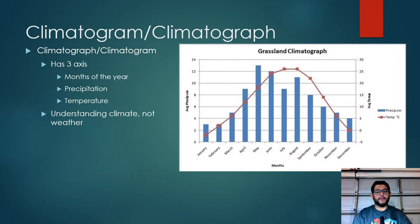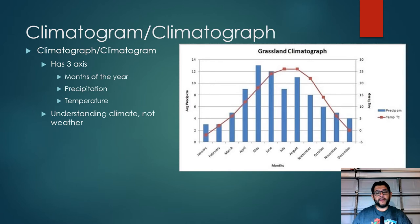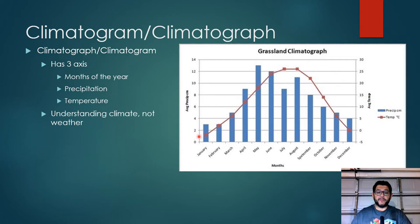This next part isn't expected until later units — around unit four or five in the College Board course description — but I wanted to bring it up earlier so you understand how these biomes work. Biomes are typically characterized by climatographs or climatograms. They have three axes: the x-axis is months of the year, and on the sides you have average precipitation and average temperature, shown as a line graph and a bar graph simultaneously.